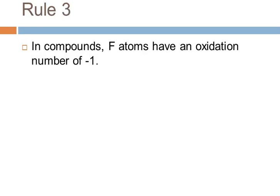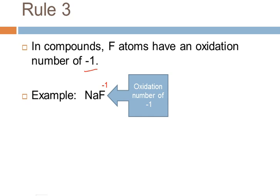Rule number three deals with fluorine. Fluorine is also unambiguous. In a compound, we assign fluorine an oxidation number of minus one, always — there are no exceptions. For example, in sodium fluoride, the fluorine has an oxidation number of minus one, and the sodium has an oxidation number of plus one because it's a monatomic ion. We often write oxidation numbers floating above the formula. In HF, the fluorine also has an oxidation number of minus one. If it's fluorine, just give it a minus one and you're set.